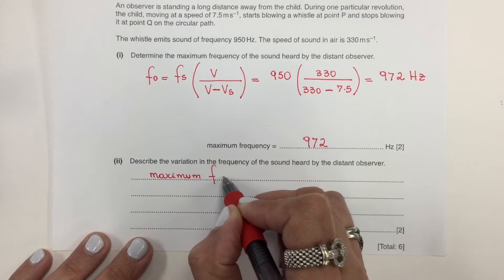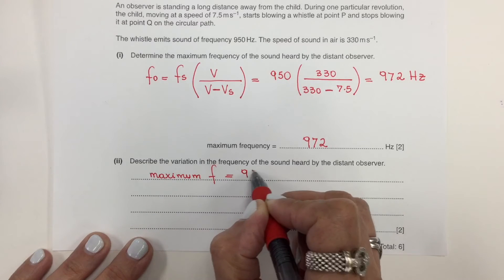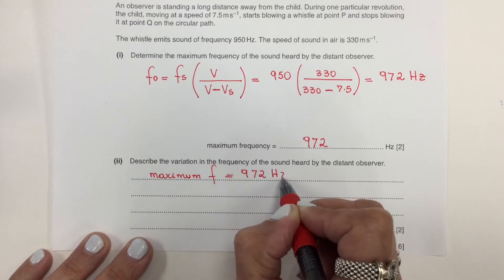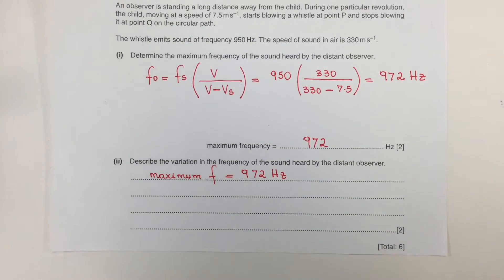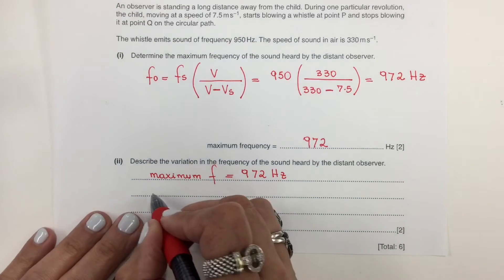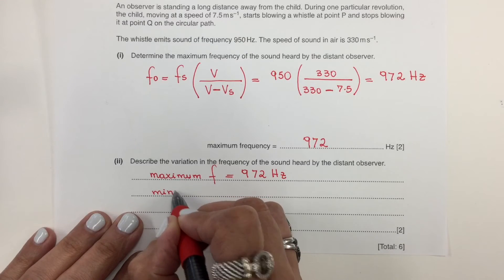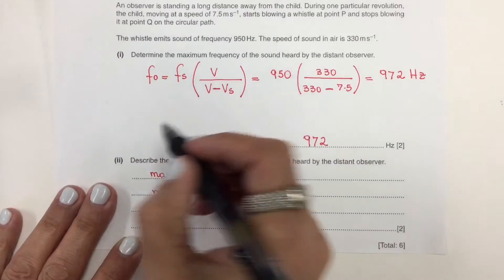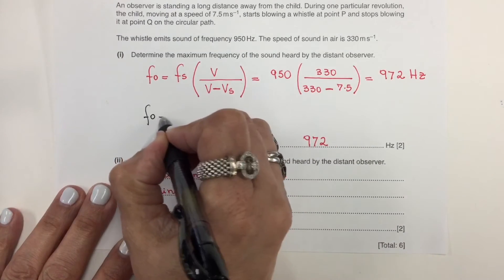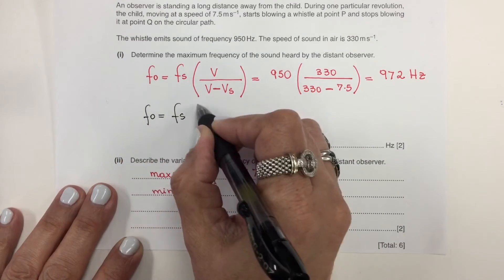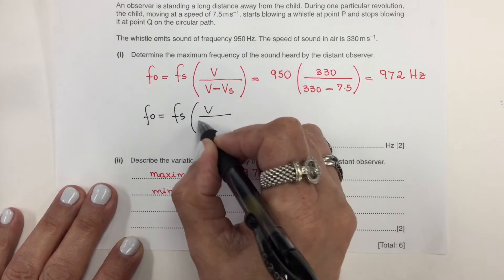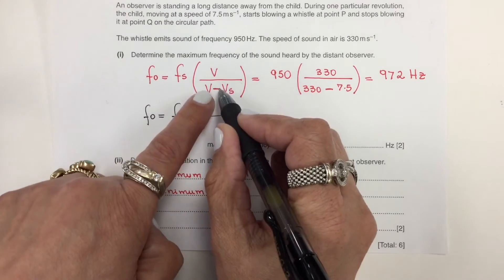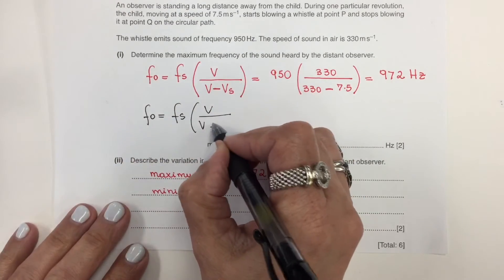Maximum frequency is 972 hertz. But what would be the minimum frequency? To calculate that, we are going to use the same formula. But instead of minus, it'll be plus.